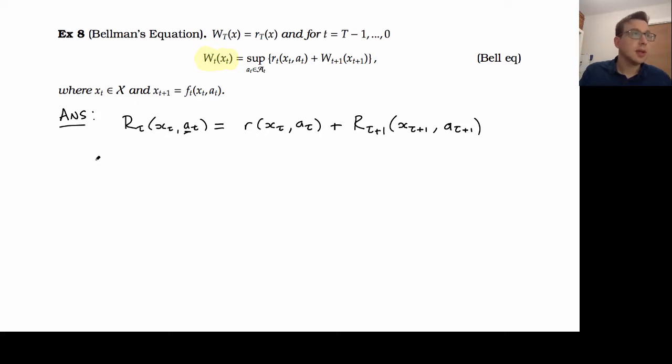So now let's let a bar of t be the vector of actions up until time capital T. We're going to maximize, you know that, sorry, w t is the maximum over all of these actions of the sum of the rewards from that state x, given the actions I'm going to take from there on after. All right, now we're going to split this up.